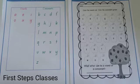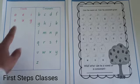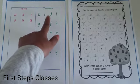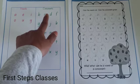Hello boys and girls. Today we are going to learn about the vowels and consonants in the English alphabet system. In the English alphabet system there are 26 letters, out of which 5 are vowels and the rest are consonants.